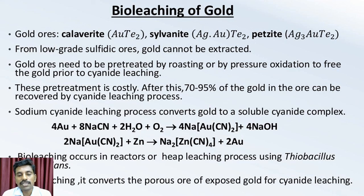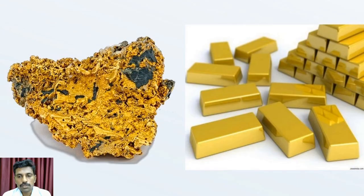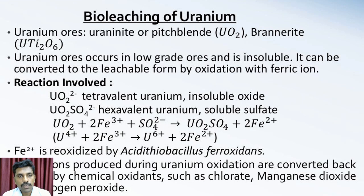Bio-leaching occurs in reactors or heap leaching process using Acidithiobacillus ferrooxidans. It is an organism used to recover the gold from its ore. After leaching, it converts the porous ore to expose gold for cyanide leaching. This photograph reveals the recovered gold materials.